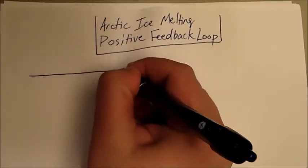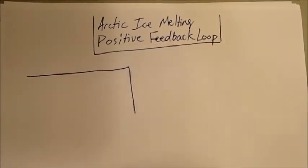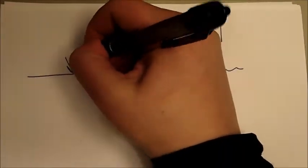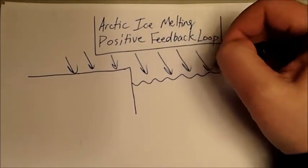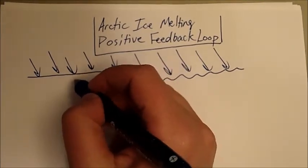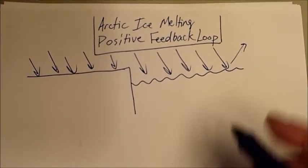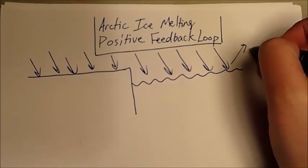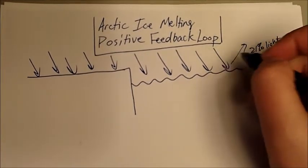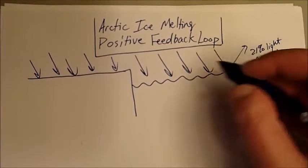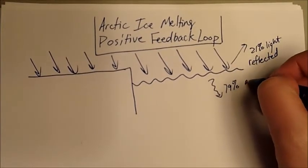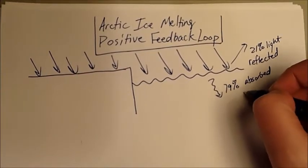So we're going to start by drawing a diagram with some ice. We have some ice and we have some water, so we have about half ice and half water. We have light coming in and hitting the ice and the water. And what ends up happening is that we have about a total of about 21% of light reflected. We then also have a total of about 79% absorbed. Remember that's absorbed as heat.